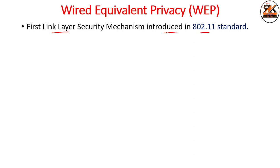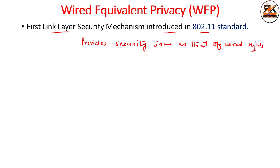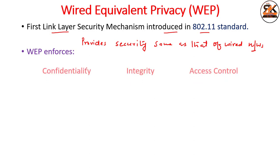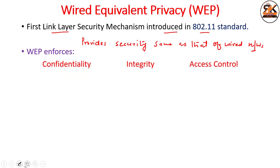WEP is a first link layer standard to provide the security level compared to that of a physical wire. It was assumed that WEP provides the same security as that of a wired network, and that is why it is named Wired Equivalent Privacy. This WEP standard enforces certain features to provide security to data in wireless networks.